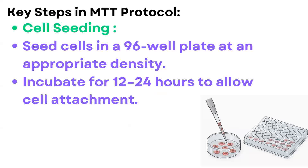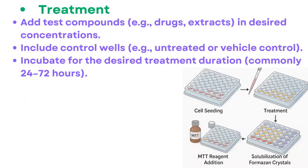The cells may be MCF-7 (breast cancer cells), liver cancer cells, or various other types of cancer cells. After seeding, incubate for 12 to 24 hours to allow cell attachment to the well plates. The next step is treatment: add the test compound or extract at a desired concentration, include control wells (untreated or vehicle control), and incubate for 24 to 72 hours.